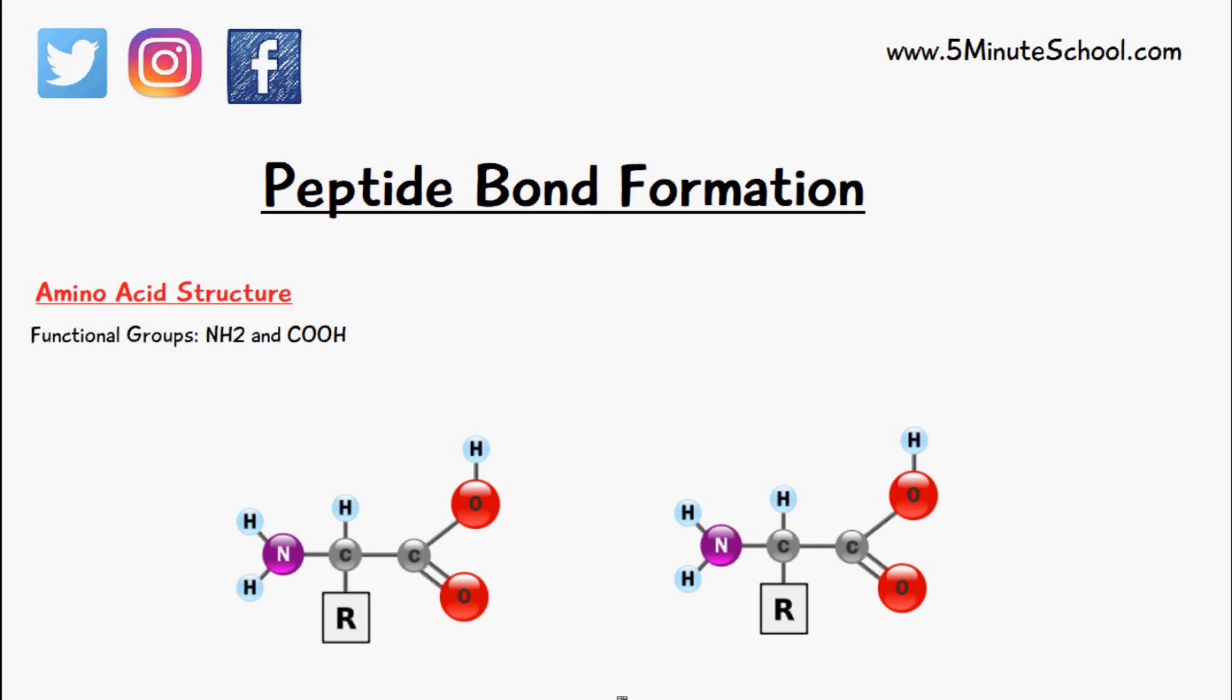So the basic structure of an amino acid is in this diagram here. Amino acids are the second most abundant material in the human body.